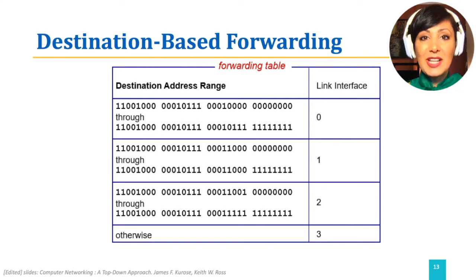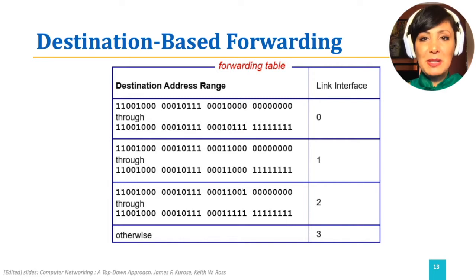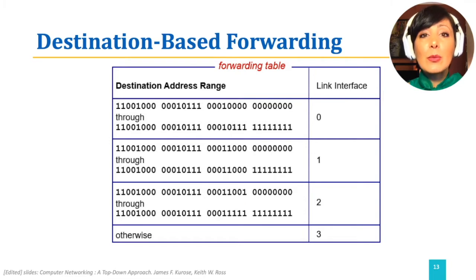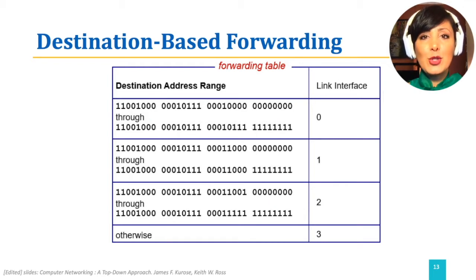What is destination-based forwarding? In traditional routing that uses destination-based forwarding, the only parameter deciding which output port to use to send out a packet is the destination of the packet. This destination will be consulted against the forwarding table at the router. The forwarding table will include the range of destination addresses and the corresponding port that tells which port the packet should use to go out to reach the desired destination.